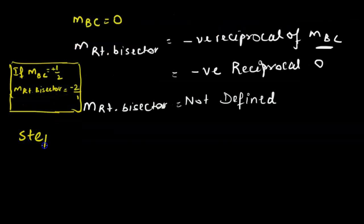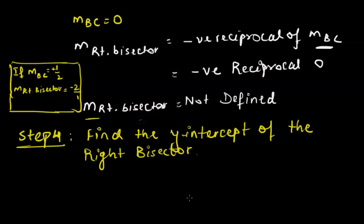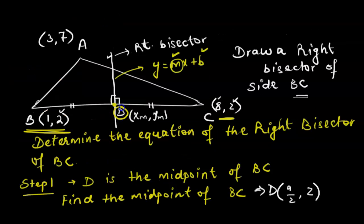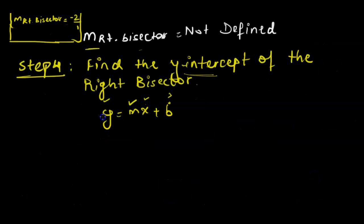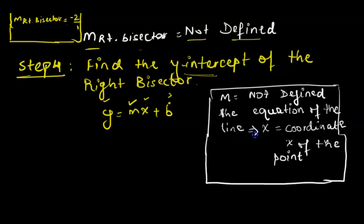However, in this example the slope is not defined. Step 4 is to find the y-intercept of the right bisector using y = mx + b, substituting the coordinates of the midpoint point D. But since the slope is undefined, we proceed differently. When the slope is undefined, the equation of the line is represented as x = the x-coordinate of the point on that line.